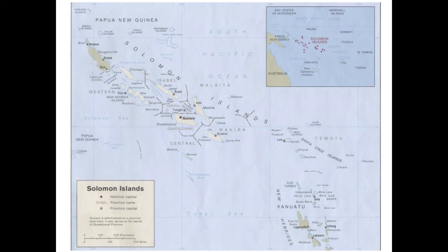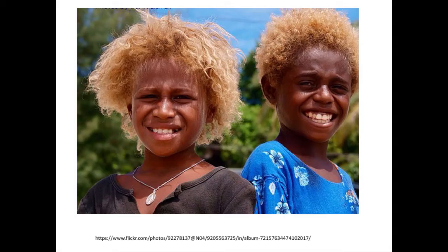One of the most remarkable genetic features of the native people of the Solomon Islands is that although the people are very dark skinned, between 5 and 10 percent of them have blonde hair. Here are some examples.